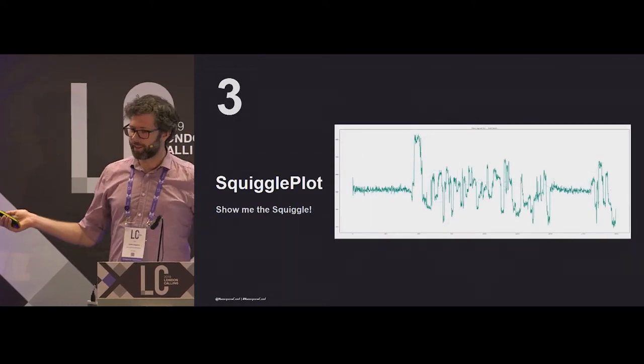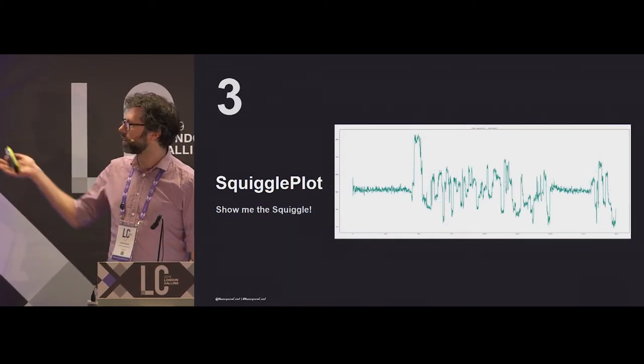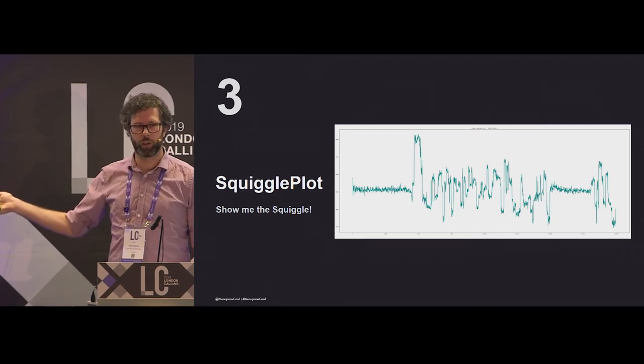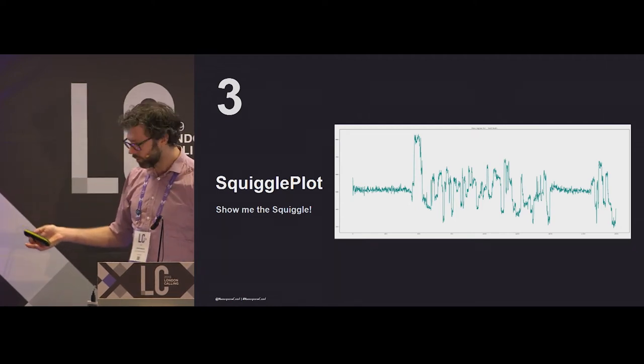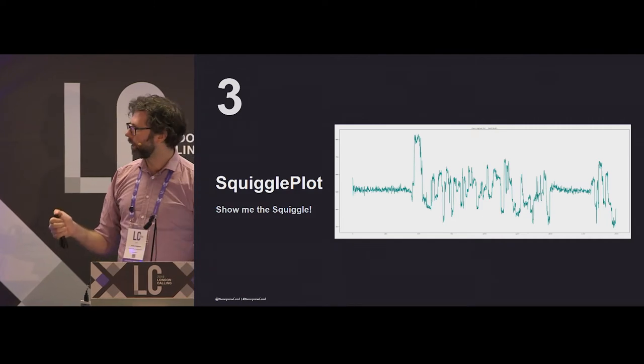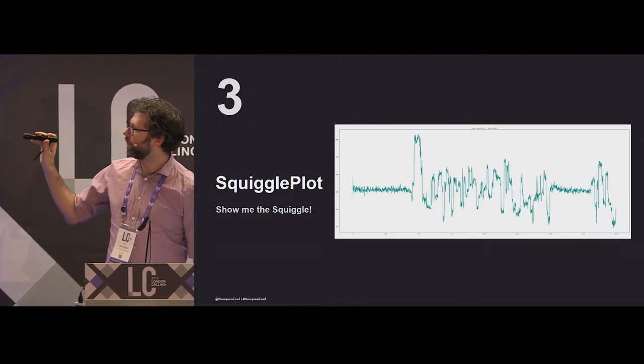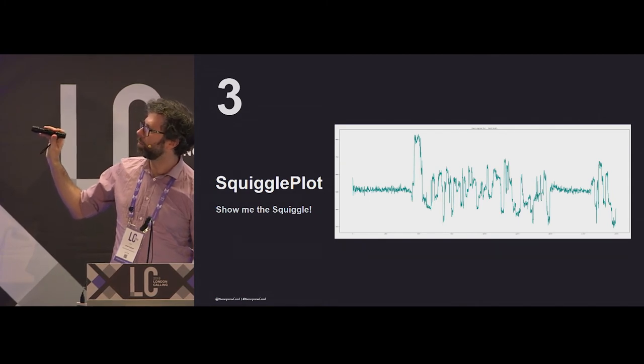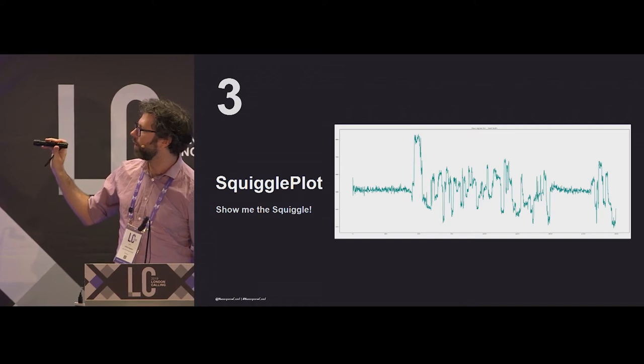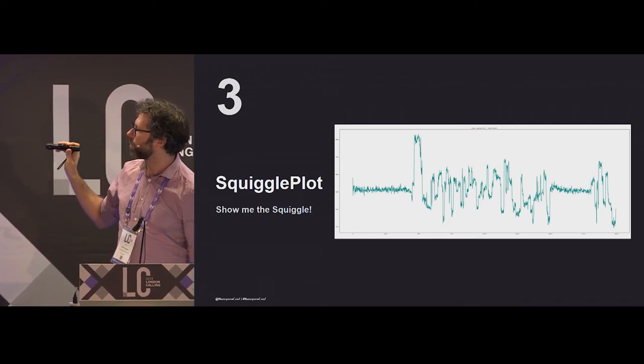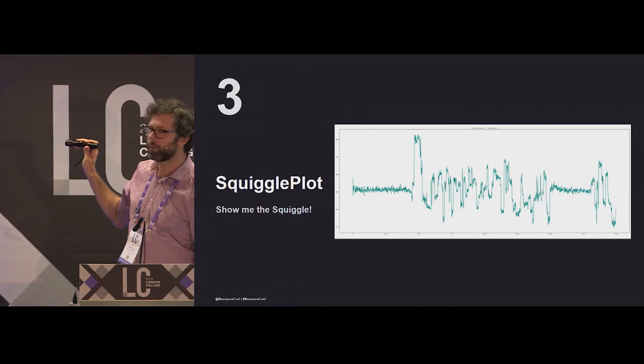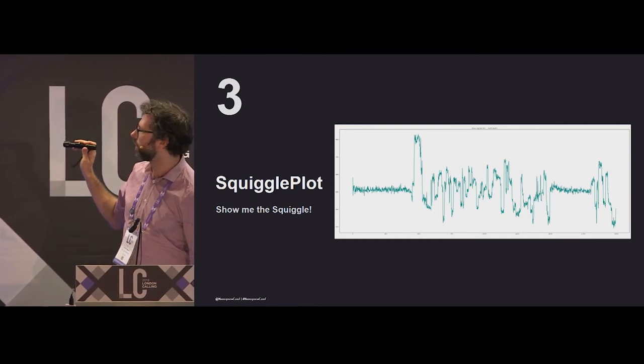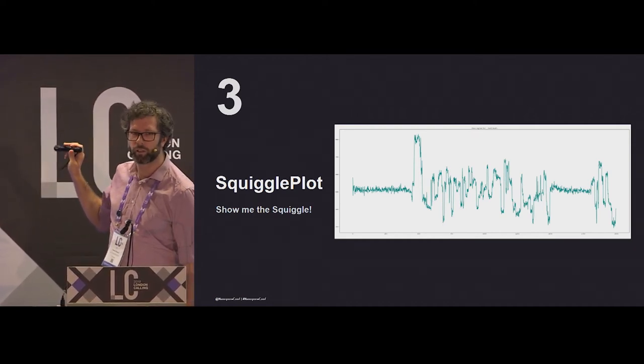So SquigglePlot, again, does exactly what it says. It plots squiggles. So this is what a squiggle looks like. And for those of you that might be new to the technology, this little bit just here, this is what we call the stall. So this is the start of a read. And then this little peak here, this is the start of the adapter sequence. And then you can go through and have some squiggles, and then this here is a poly T region. And then this goes off to some cDNA.